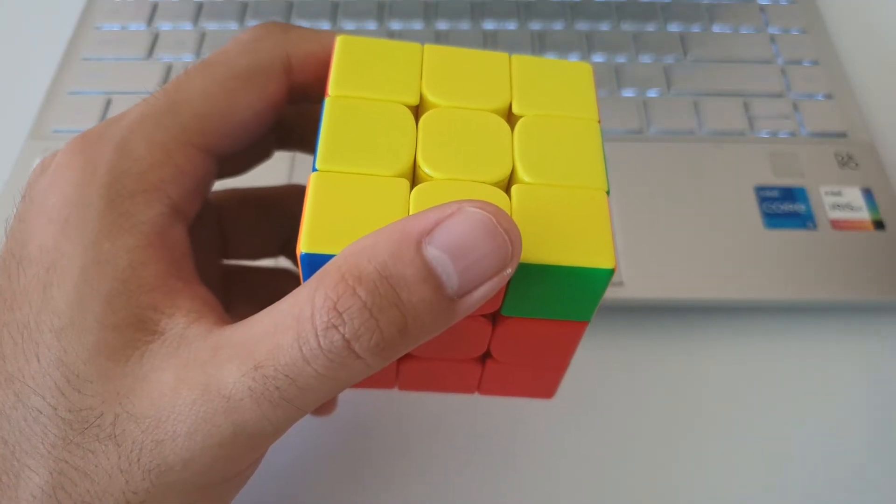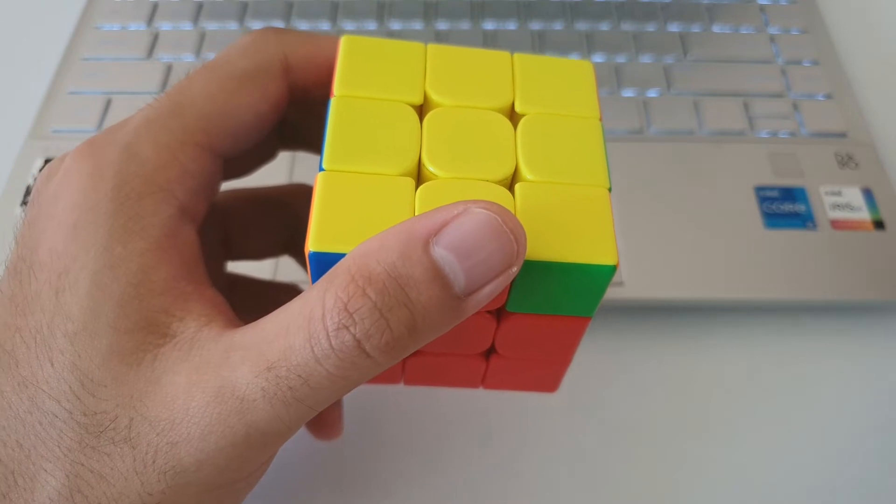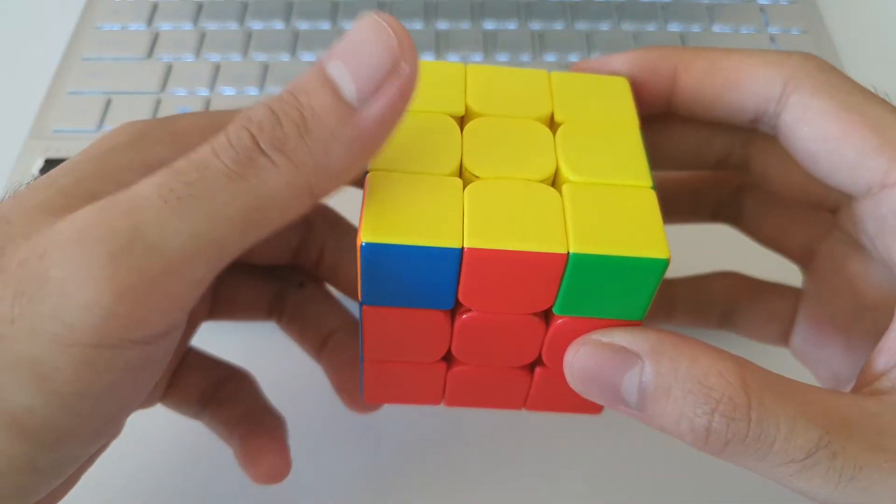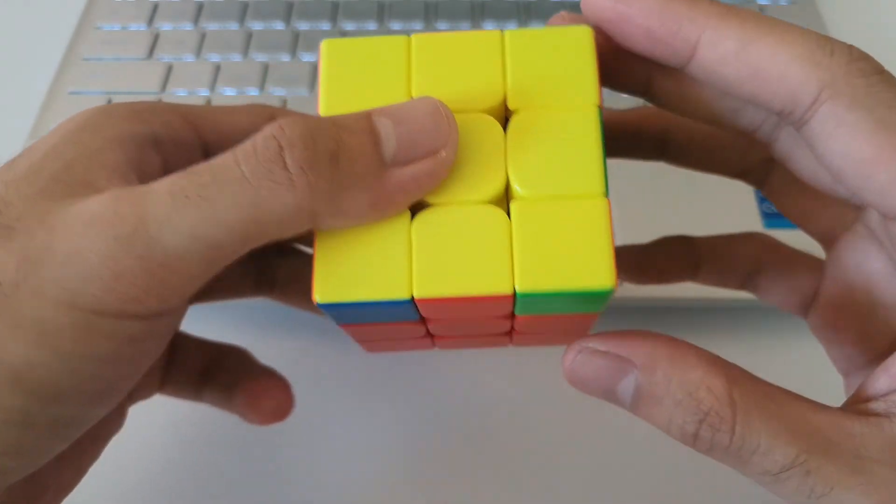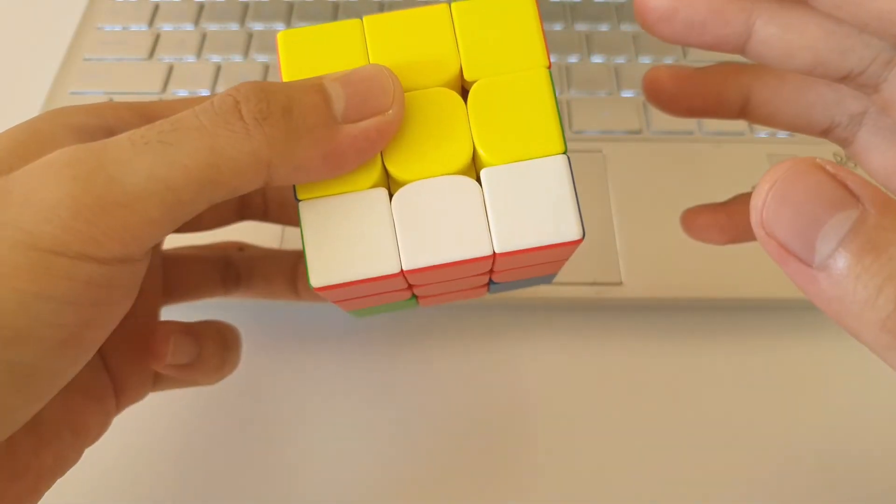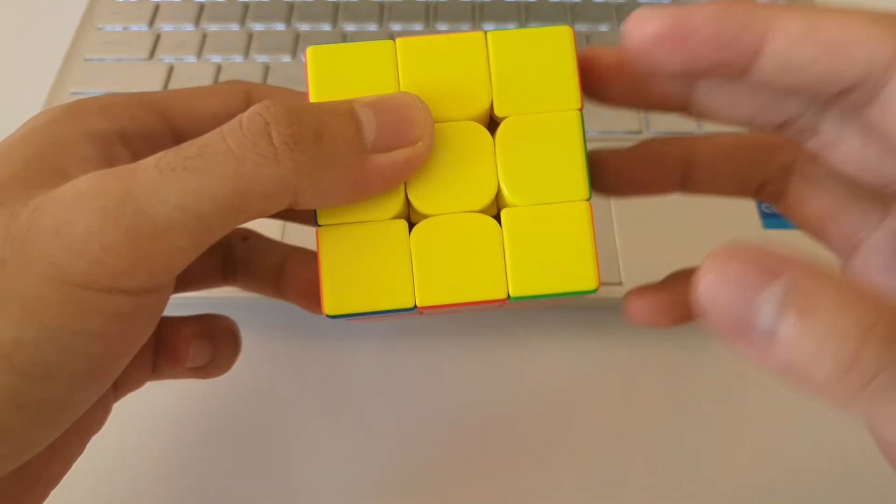So the biggest problem I see a lot of beginners facing when they're learning the finger tricks for the E-perm is doing the D moves. Now, the D moves can be done just with your ring finger with a flick like this. This works quite well, and it is probably the best way to do it.